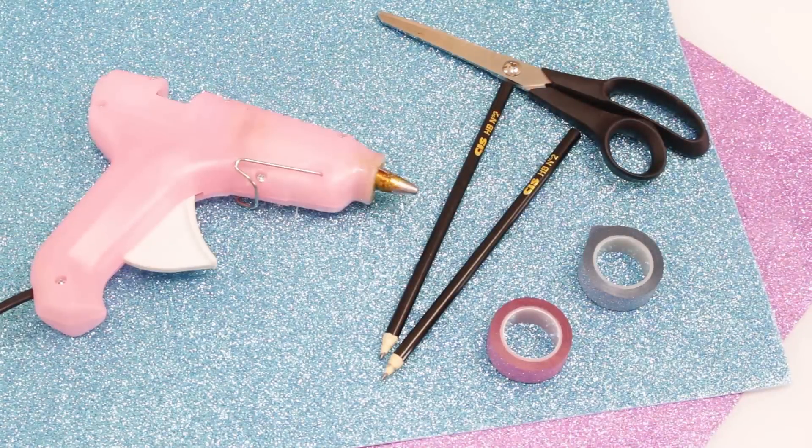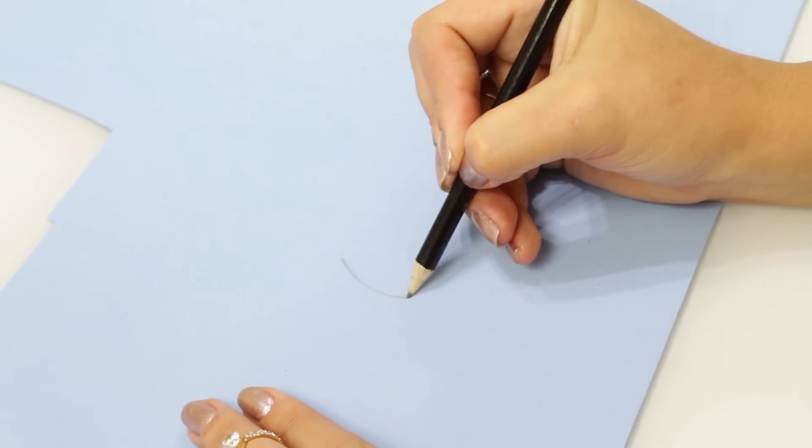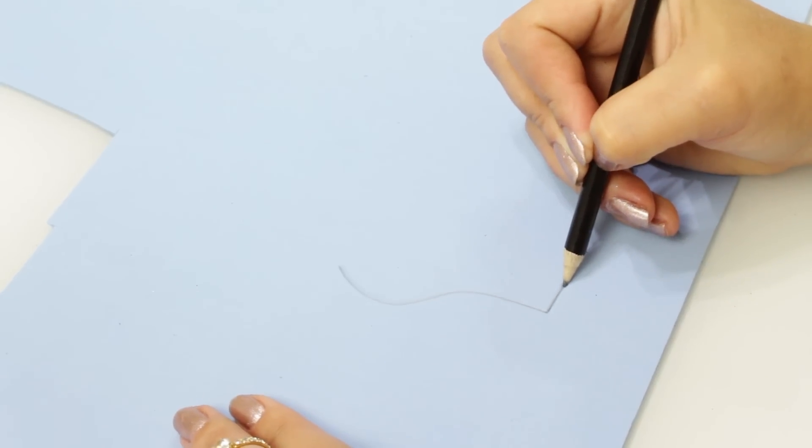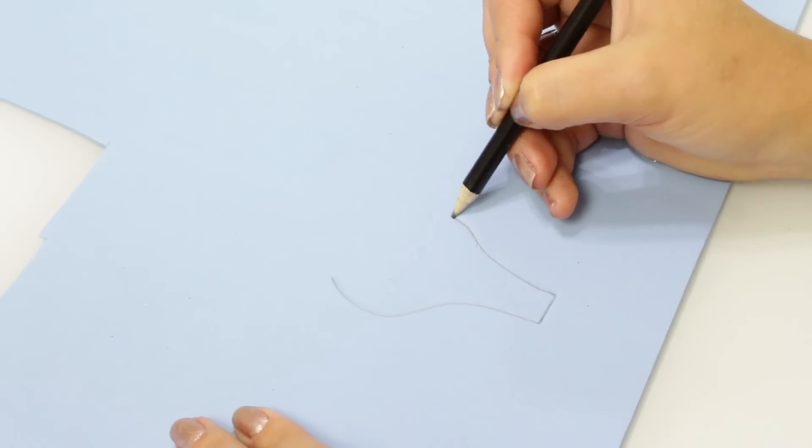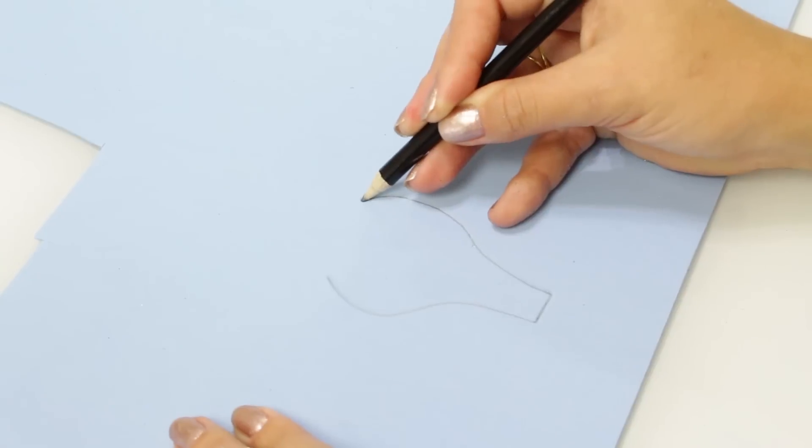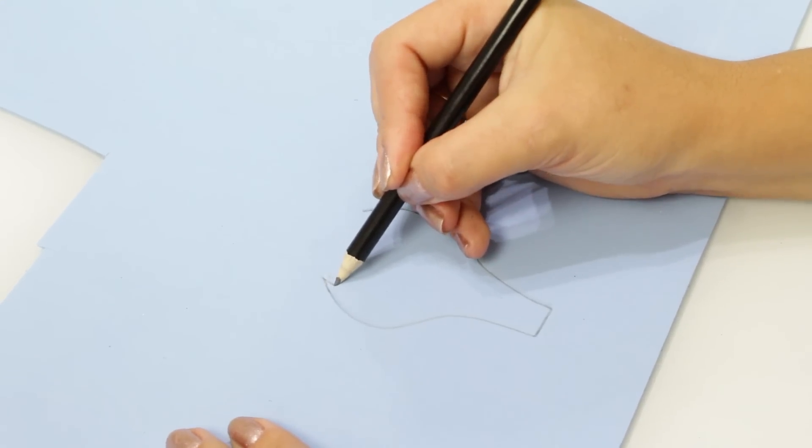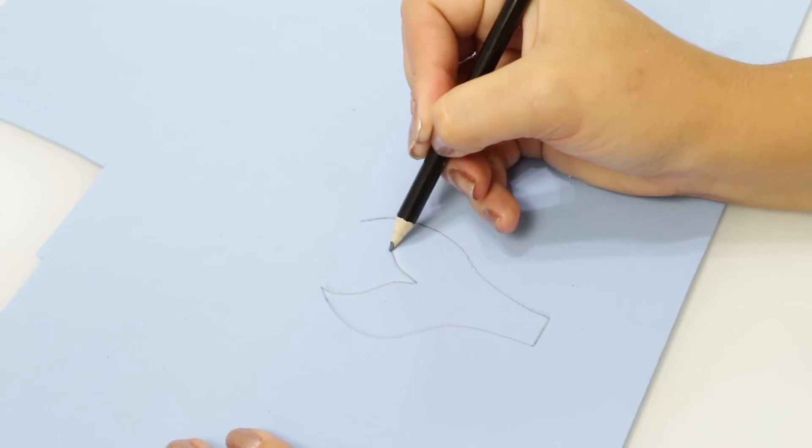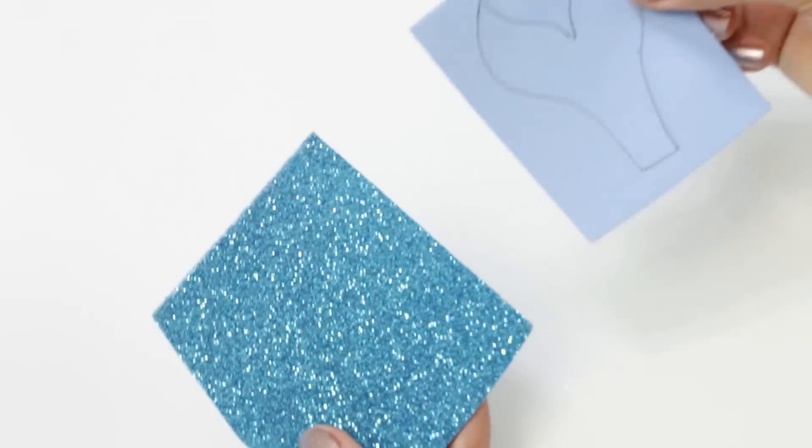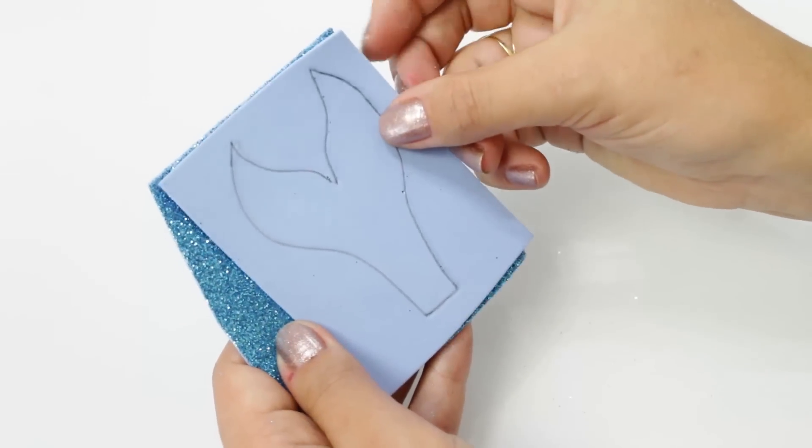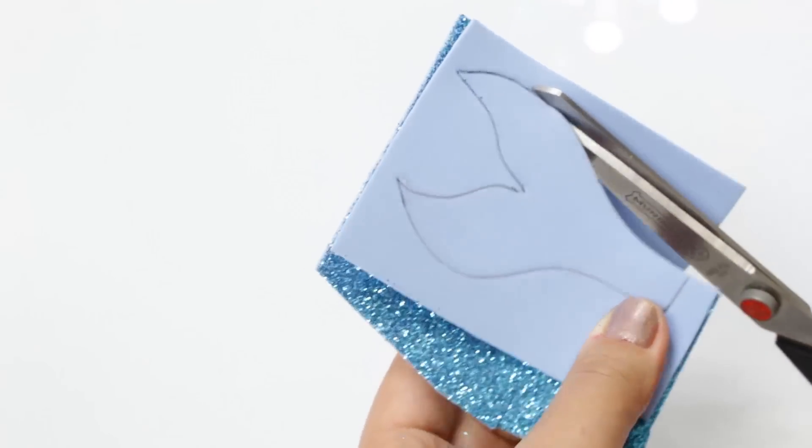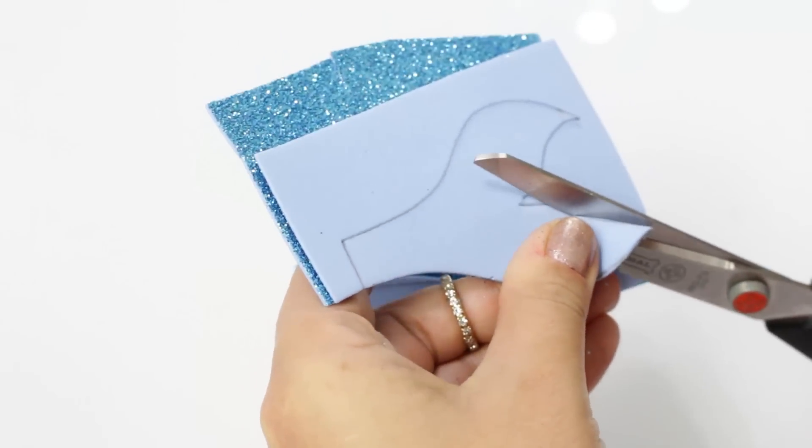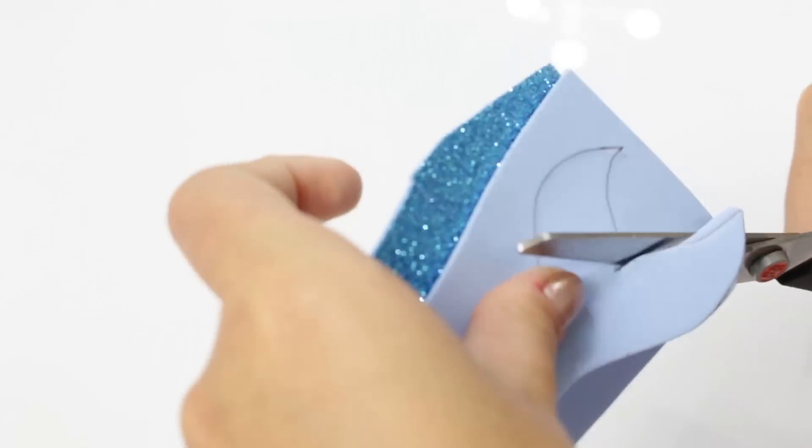Agora eu vou começar fazendo o desenho de uma cauda de sereia também na parte de trás do meu EVA. Eu vou fazer de olho. Você só tem que se atentar a deixar a parte de baixo da cauda, não a parte que tem as barbatanas, a outra parte, um pouquinho mais grossa do que o seu lápis. Porque você vai precisar juntar as duas partes da cauda em volta do lápis, então tem que ser um pouquinho grossa. Daí você vai pegar dois pedaços de EVA, um lado você vai deixar com o EVA da parte que você desenhou pra cima, e o outro lado você vai deixar com o EVA de brilho pra cima, pra uma parte poder completar a outra.